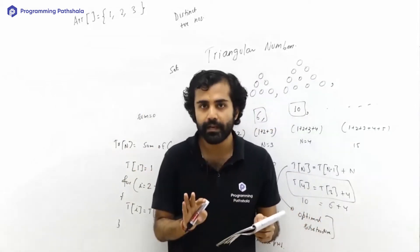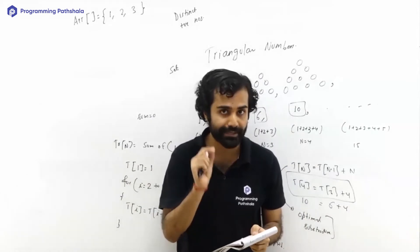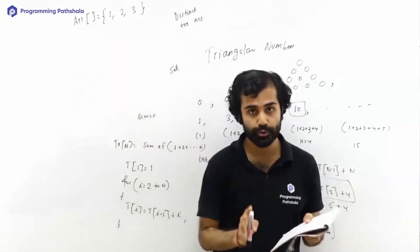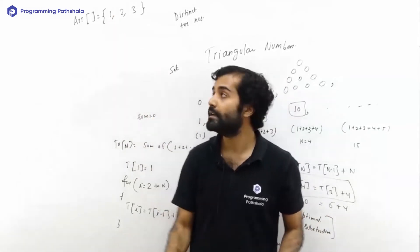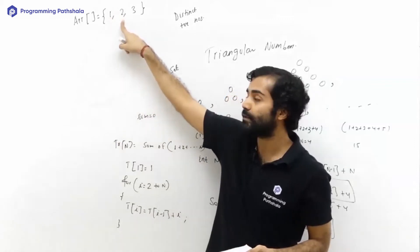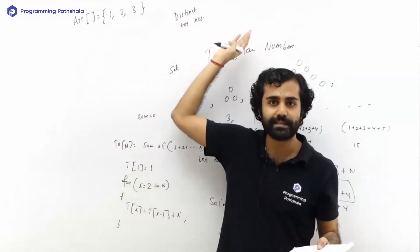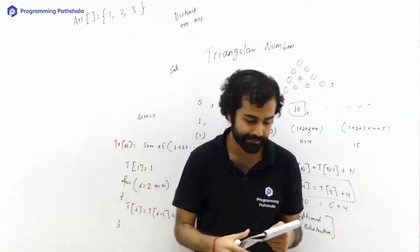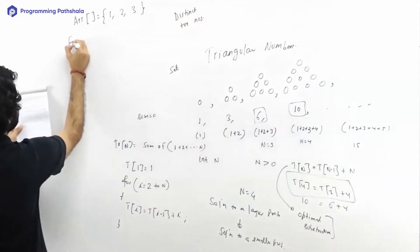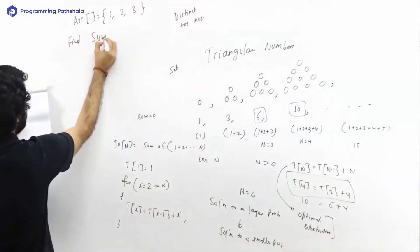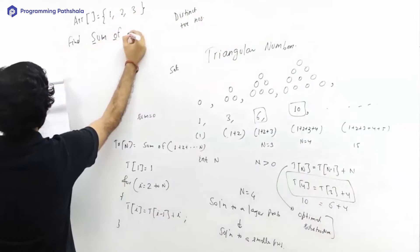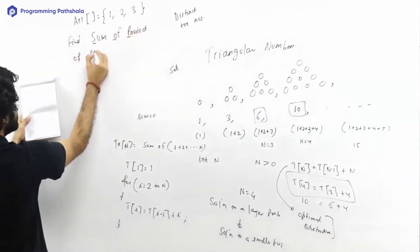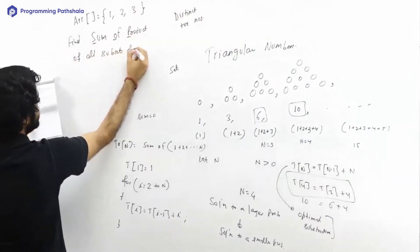The reason is simple: using combinatorics, for every element there are two choices — either take it or not take it. Two choices for each element, so when you multiply you get 2 to the power n. Here n is 3, so there are 8 subsets. The question wants us to find the sum of products of all subsets of this set.